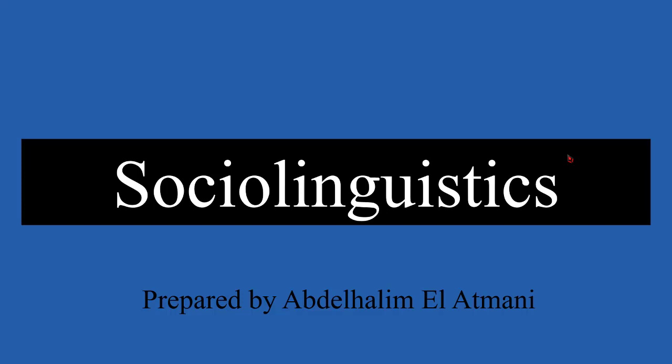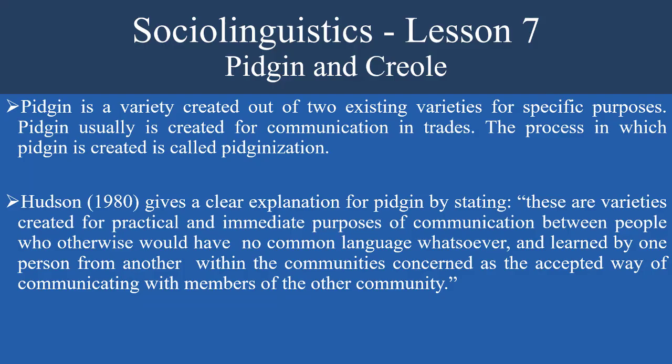Hello dear students, welcome to sociolinguistics lessons. Today we'll be talking about pidgin and Creole. Pidgin is a variety created out of two existing varieties for specific purposes. Pidgin is usually created for communication, especially in trade. The process in which pidgin is created is called pidginization.